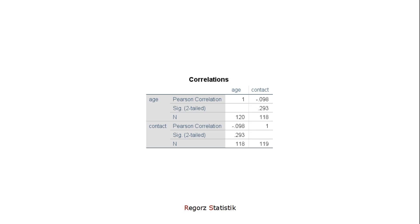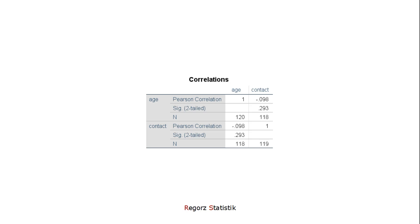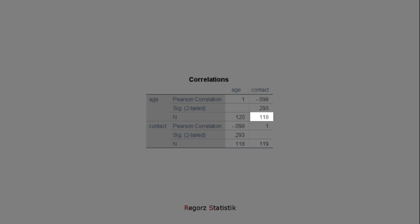From the correlation output, we need two numbers. We need this correlation, and we need the sample size for the correlation.